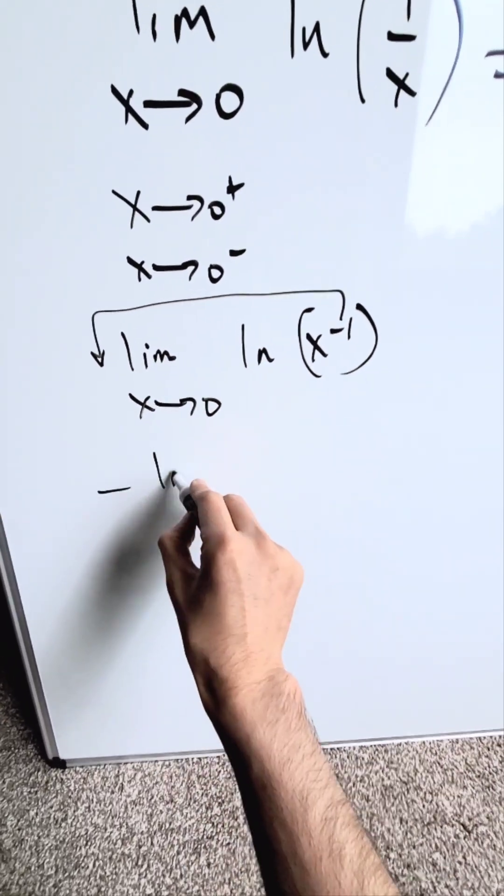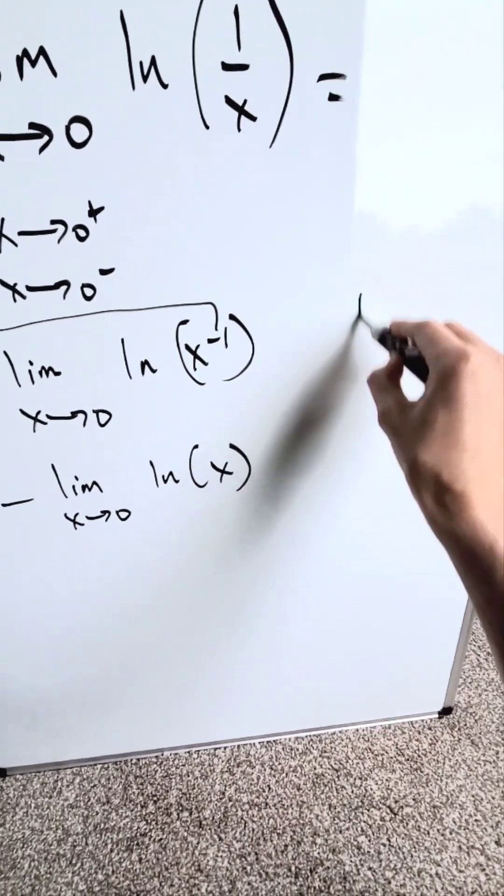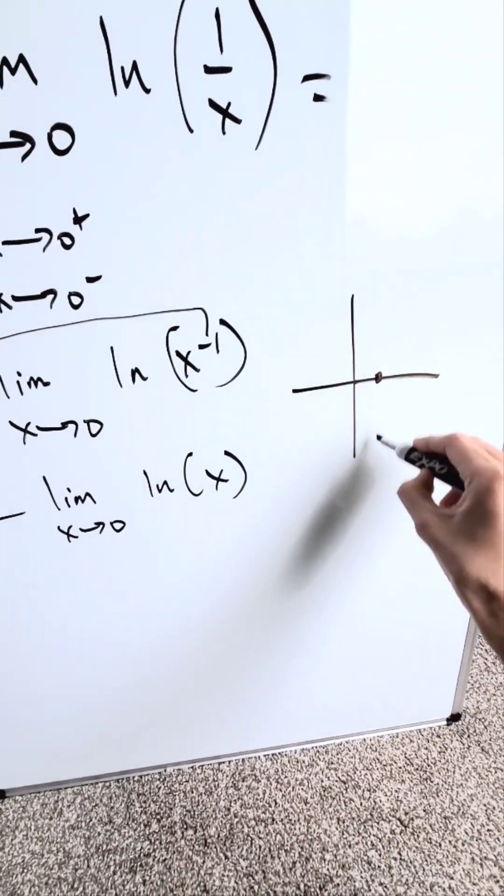You're really looking at minus limit as x approaches 0 of natural log x. Now the function has become natural log x. When you look at the natural log x function, this is it.